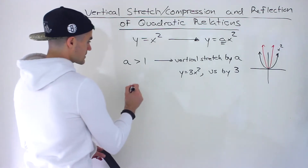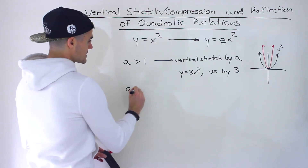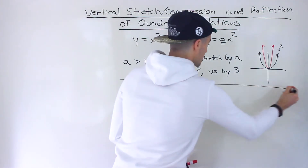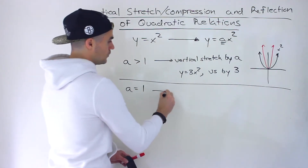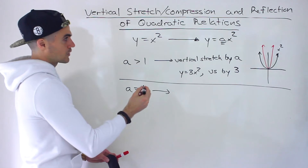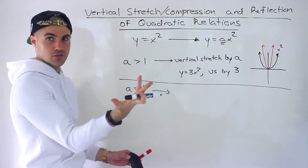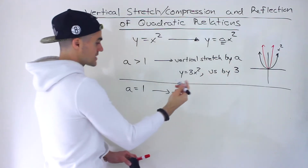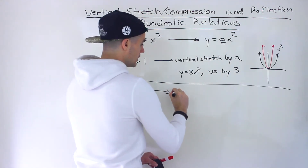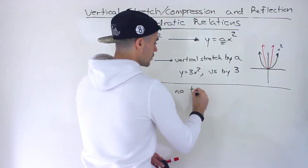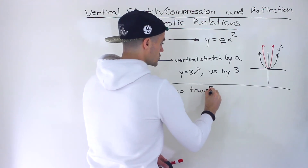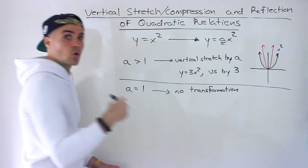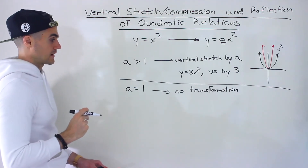The next case is if a is equal to one. If a is equal to one, notice what we're going to get — we end up with that same function y equals x squared. There will be a one here: one times x squared is just x squared. So an a value of one means there's actually no transformation. It's just that same base or parent function, y equals x squared.